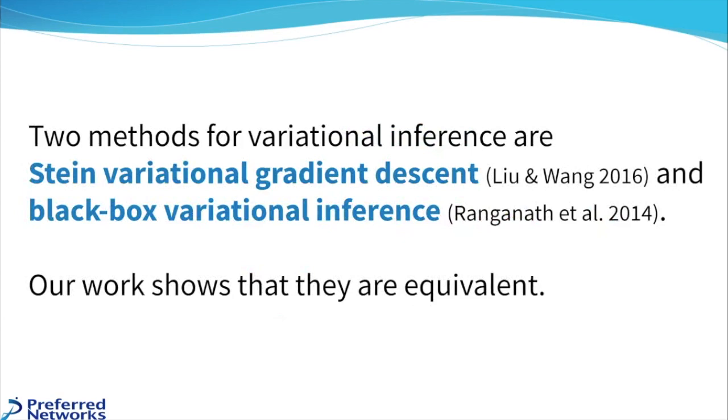Two such methods are Stein variational gradient descent, or SVGD, and black box variational inference, or BBVI. Our work shows that these two methods are actually equivalent in the sense that they generate the same sequence of approximate posteriors.